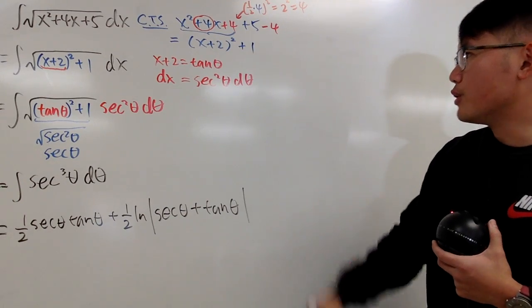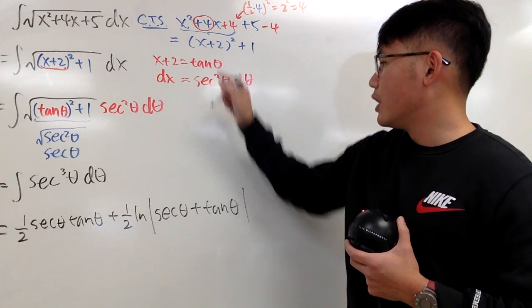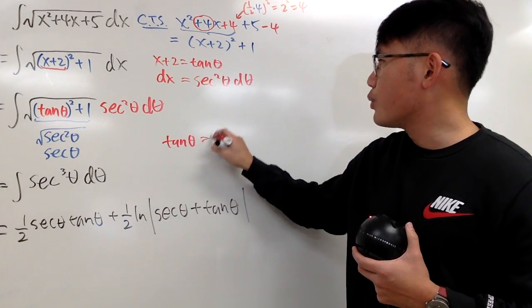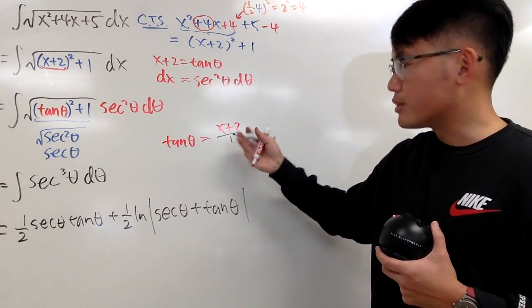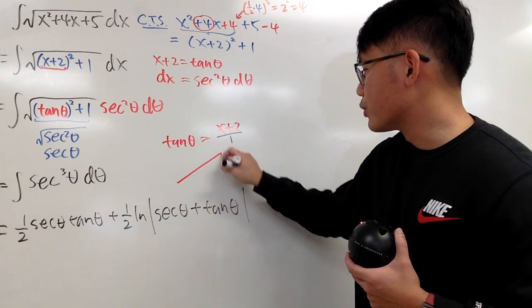Well, how can we go back? Of course, we have to rely on this right here. So let's take a look. Let me put this down right here again. We know tangent theta equals x plus 2. And let's look at this as x plus 2 over 1. And then from here, we'll draw our usual right triangle.